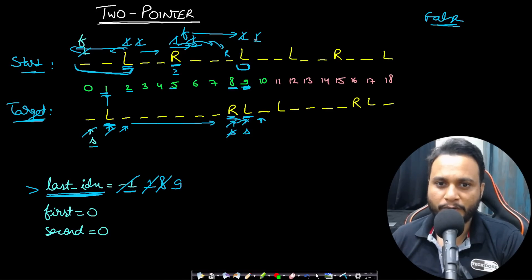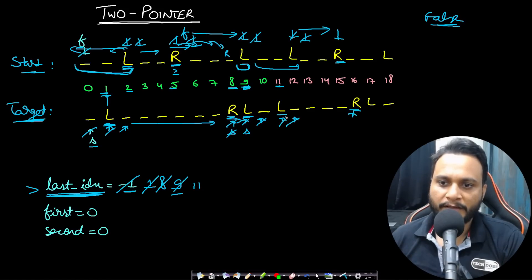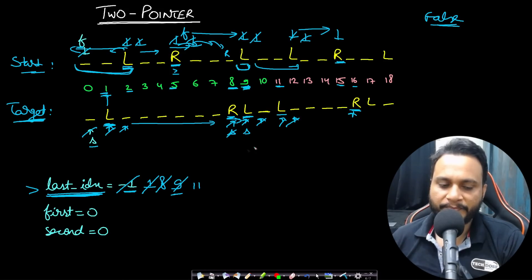Going through the loop again, we skip spaces and find two matching Ls. The movable range is from index greater than 9, so from 10 to the current start index 12. Target L is at index 11, which falls in range — fine. We update last index to 11, do first++ and second++, skip all characters. The next two corresponding characters are both R. Since it is R, target R at index 16 must be greater than or equal to start R at index 15 — yes, 16 ≥ 15. Last index updates to 16.